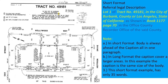It only takes three steps to complete the referral legal description. First, refer to the tract map. The subject is lot 1 in the center of the map. Then go to the top of the tract map and write down the tract number, city, county, state, and so on.